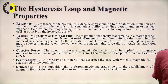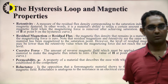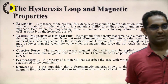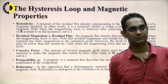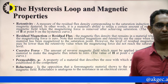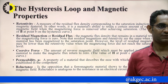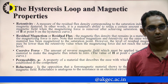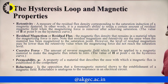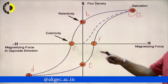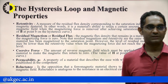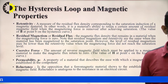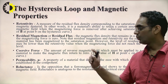Next is the coercive force — the amount of reverse magnetic field which must be applied to a magnetic material to make the magnetic flux return to zero. The value of H at point C on the hysteresis curve is the coercive force.